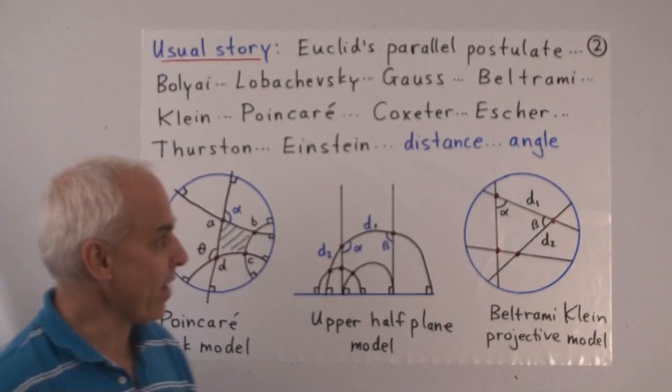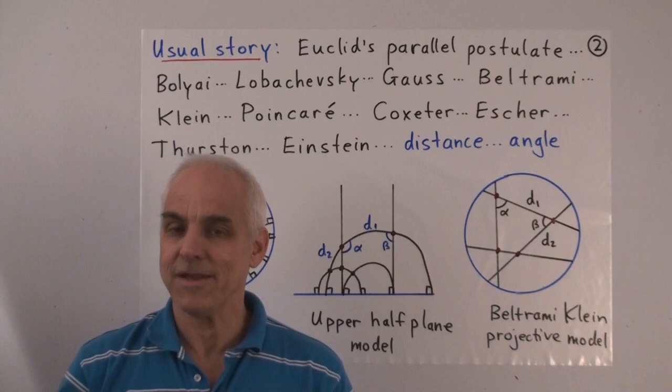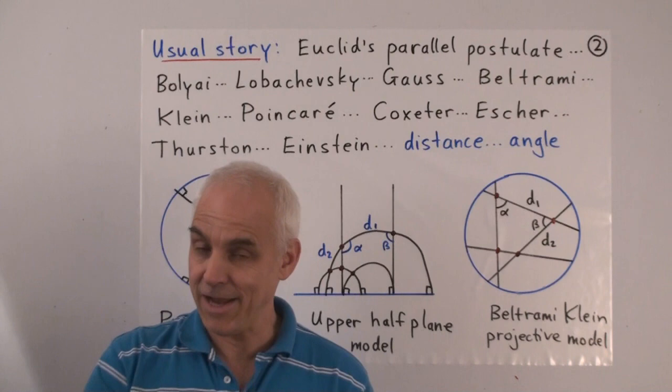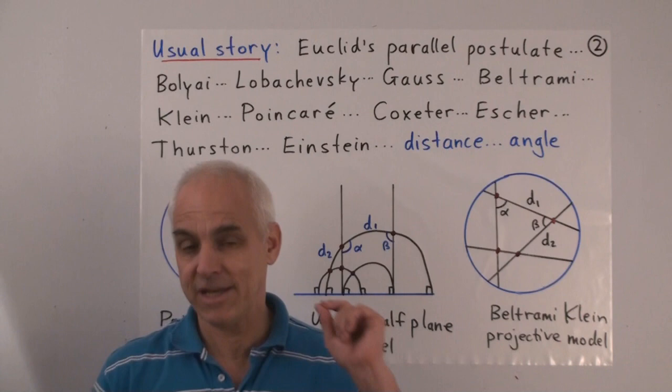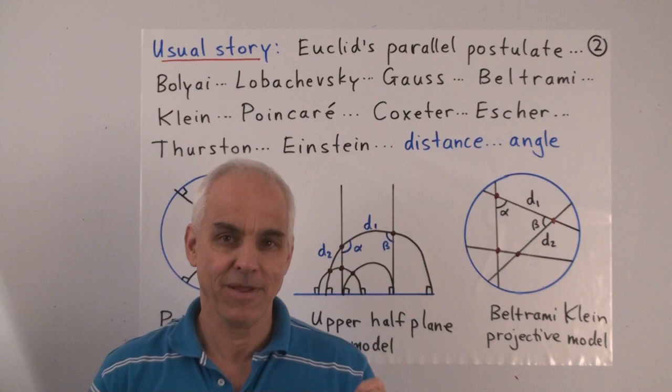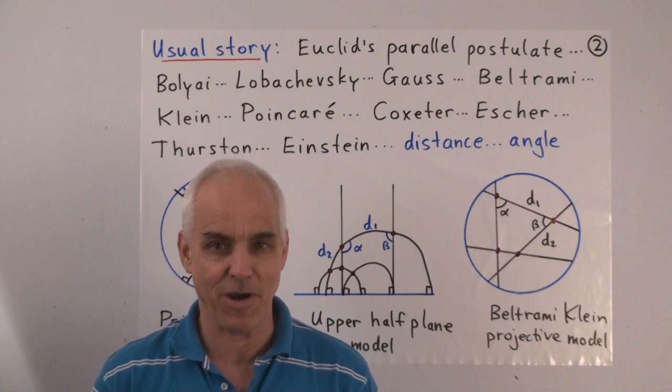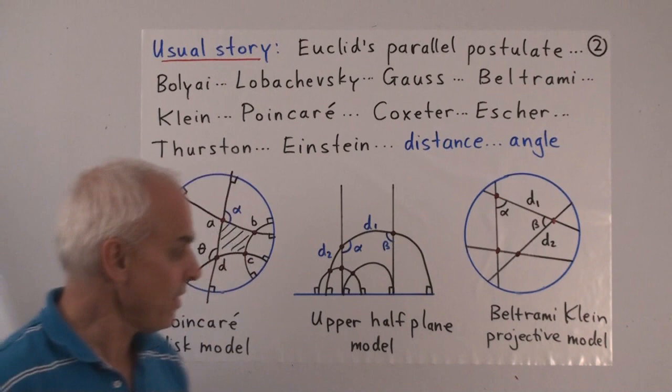Then further amplified and explained by Beltrami, Klein, Poincaré, and then connections with 20th century figures such as Coxeter, the Dutch artist Escher, Thurston and his program for understanding three manifolds, and perhaps Einstein's special theory of relativity. The usual story is framed with the assumption, almost always unchallenged, that the right way of thinking about geometry is in terms of distance and angle.